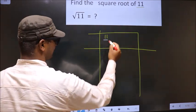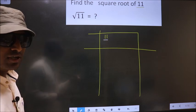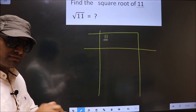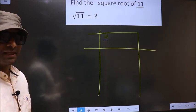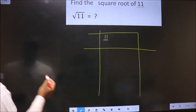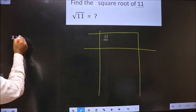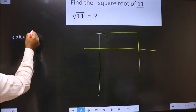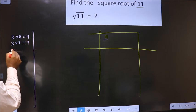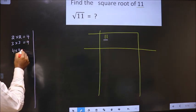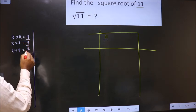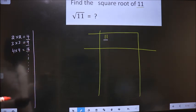Here we have 11. 11 is not a perfect square. So now we should find out between which two perfect square numbers 11 lies. The perfect square numbers are: 2×2=4, 3×3=9, 4×4=16, and so on. These numbers are called perfect squares.